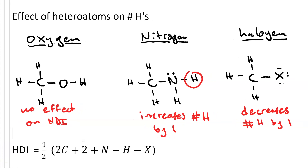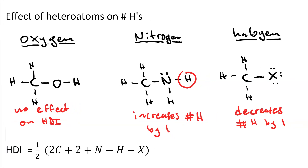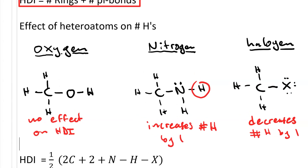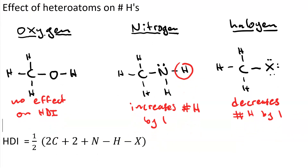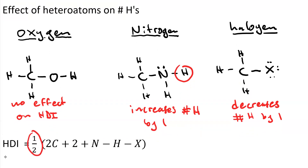Including these effects, we get the equation for hydrogen deficiency index. The HDI is the number of rings plus the number of pi-bonds. Since each ring or pi-bond decreases the total number of hydrogens by 2, that's why we have the one-half. This is one-half of: the expected number of hydrogens minus halogens — that is, 2 times the number of carbons plus 2, as in a fully saturated alkane, plus 1 for each nitrogen, minus the actual number of hydrogens, minus the halogens. Notice there's nothing about oxygen in this equation.